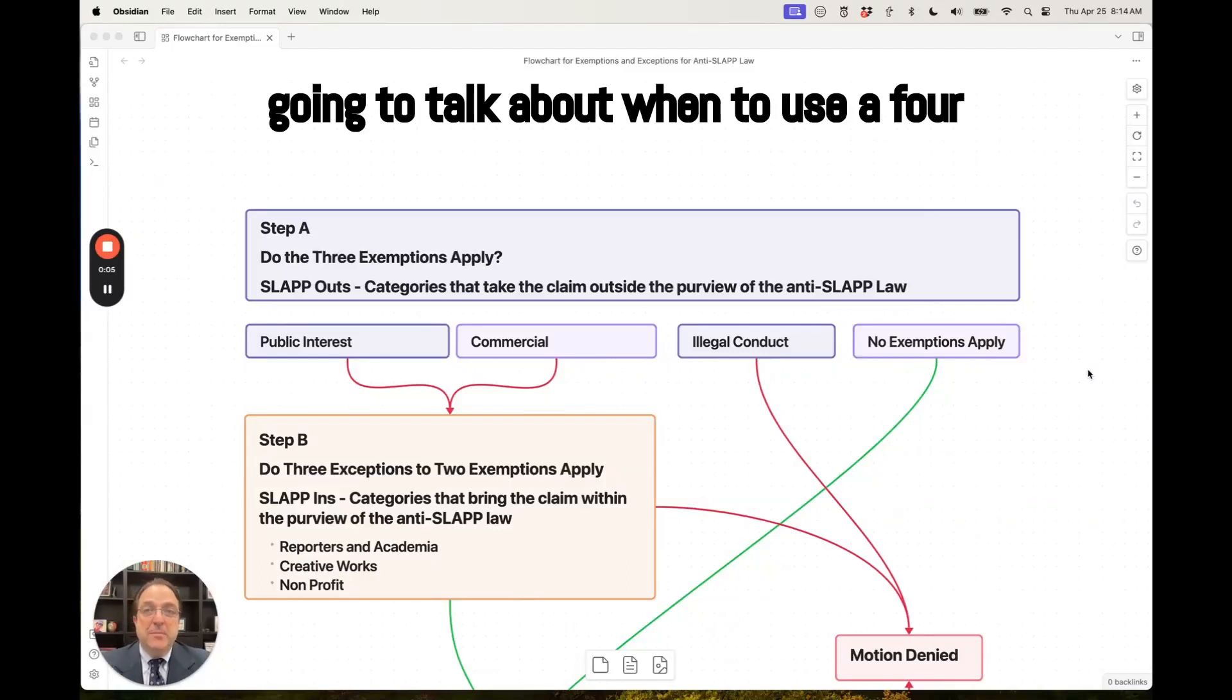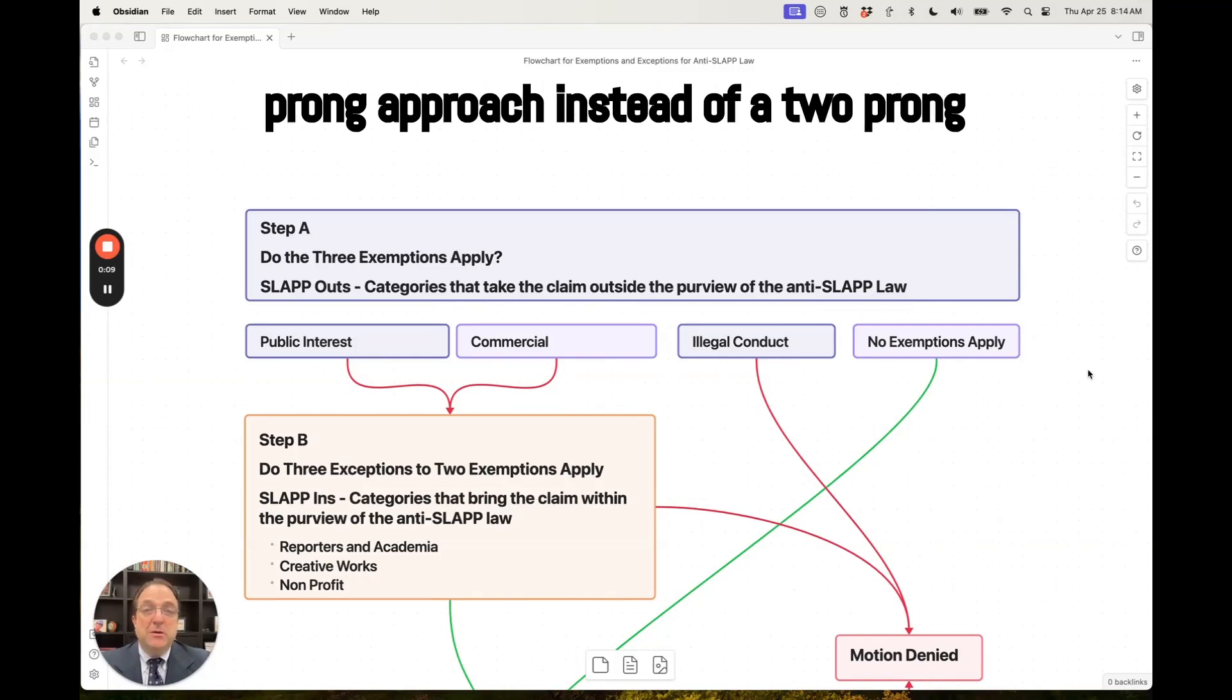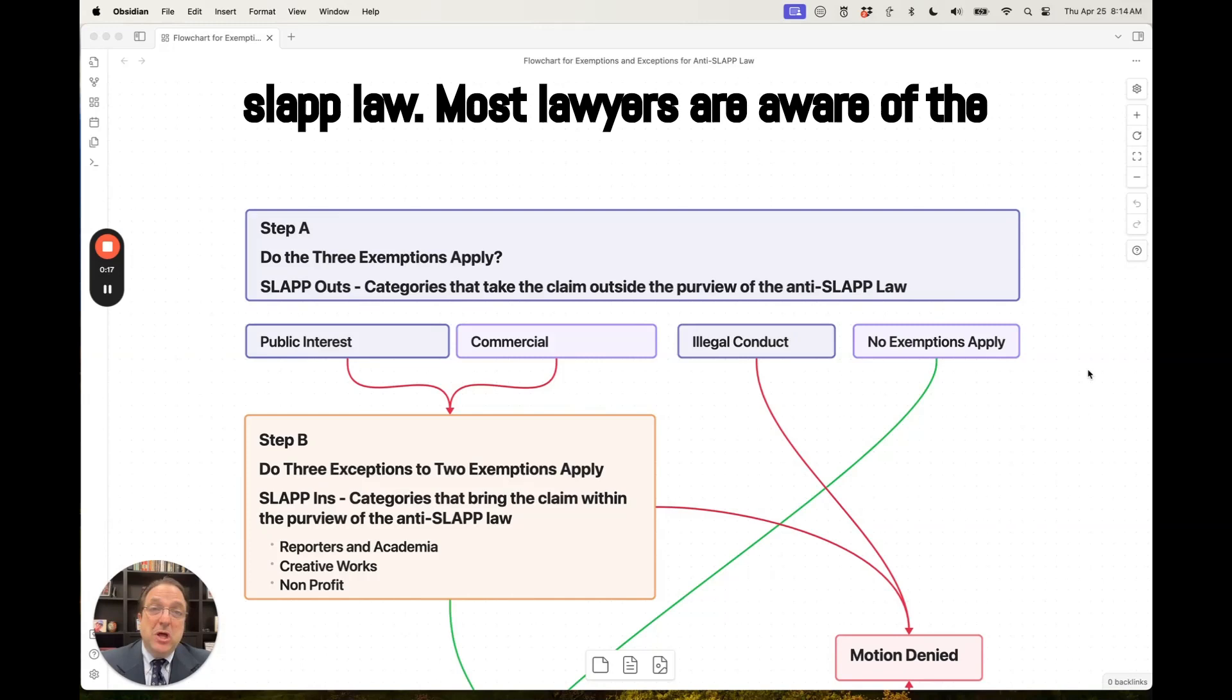All right, I'm Jeff Lewis. Today we're going to talk about when to use a four-prong approach instead of a two-prong approach when applying California's anti-SLAPP law.